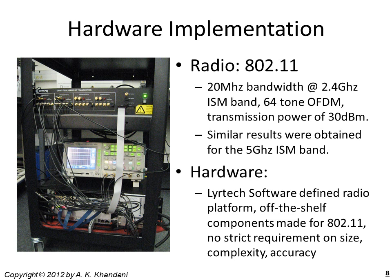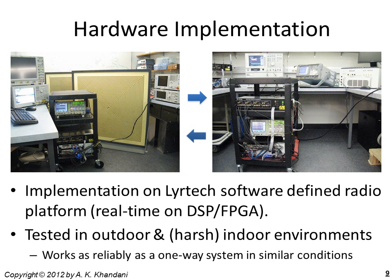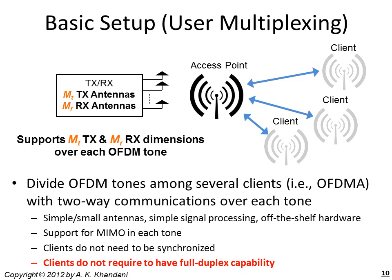RF transmission is based on 802.11 using a 20 MHz channel at 2.4 GHz. Transmission power is about 30 dBm, typical for cellular applications. The basic physical layer follows 802.11 in terms of OFDM structure, preamble, and synchronization. For hardware implementation, we use the software-defined radio platform by Lirtek, and the final outcome has been tested in outdoor and indoor environments and works as reliably as a one-way system. The goal is to connect an access point to several clients multiplexed using OFDMA, supporting two-way connection over each OFDM tone with MIMO.